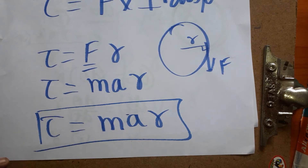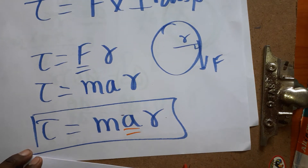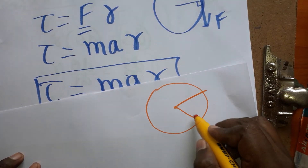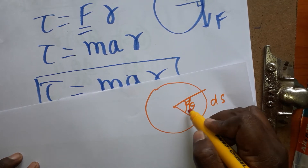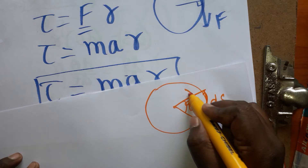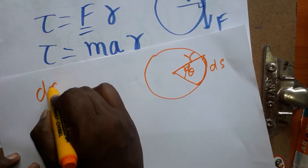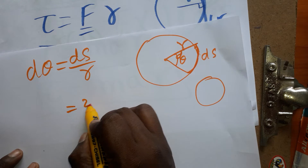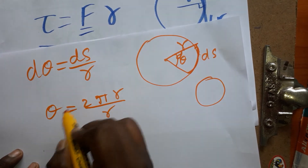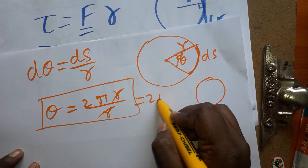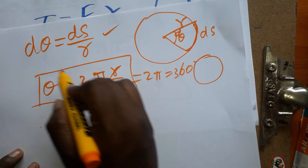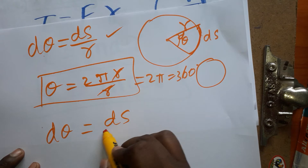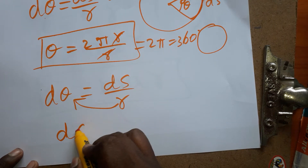Now I will relate linear and angular motion. In a circle, d theta is the angle of rotation, ds is the linear displacement, and r is the radius. The relation is d theta equals ds divided by r, so ds equals d theta times r. We can verify this: for a full circle, ds equals 2 pi r, so theta equals 2 pi, which is 360 degrees — confirming the equation is correct.